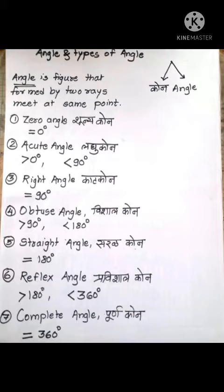The fourth type of angle is obtuse angle. The angle whose measure of angle is greater than 90 degree but less than 180 degree.